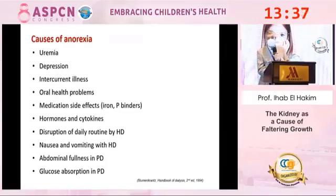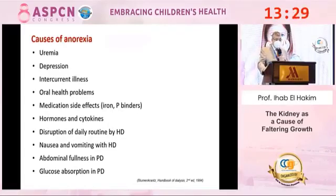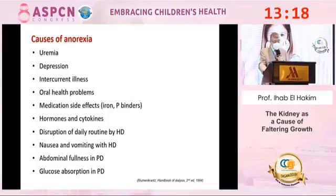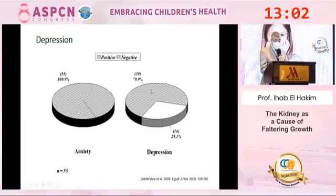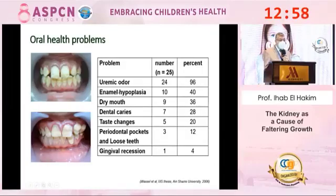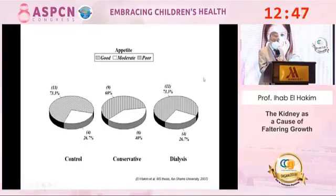The causes of anorexia in CKD patients include uremia itself causing decreased appetite, depression, intercurrent illnesses, oral health problems, medications, hormones and cytokines, disruption of daily routine in hemodialysis patients with nausea and vomiting during sessions, and abdominal fullness in peritoneal dialysis patients due to glucose absorption. In our unit at Ain Shams University, we found depression in about 70–71% of patients, and poor appetite in more than 73% of our dialysis patients. Oral health problems were also identified, and their correction partially improves appetite.